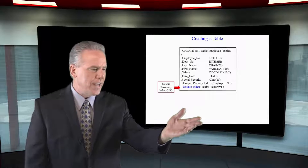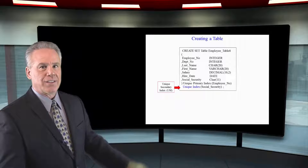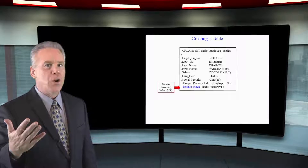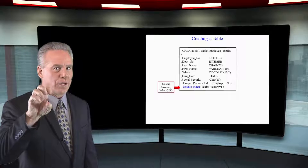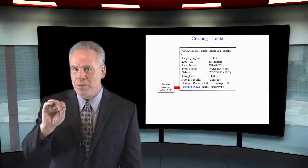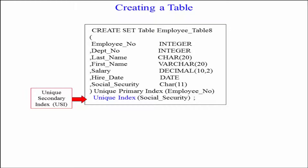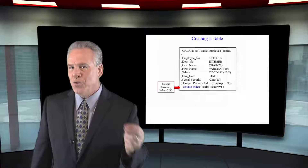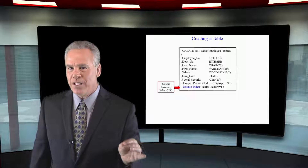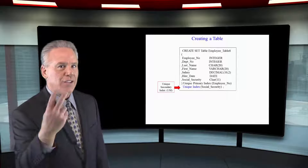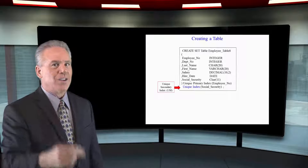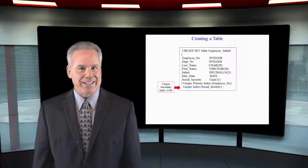Here I've created a table with a unique primary index — an OOPI. It's always a single-amp operation, single row retrieve. It's the fastest query known to mankind. I've also implemented a unique secondary index on Social Security — an OOSI. That unique secondary index of Social Security, when queried in the WHERE clause, is a two-amp operation. So both will be lightning-speed access.